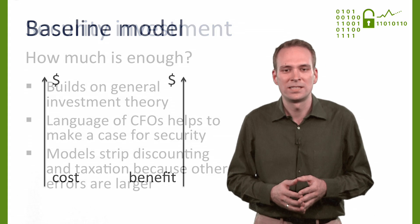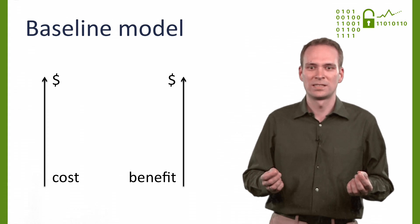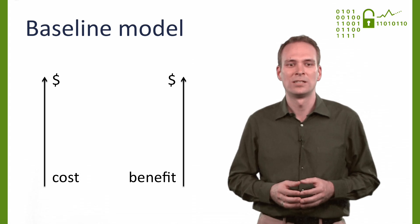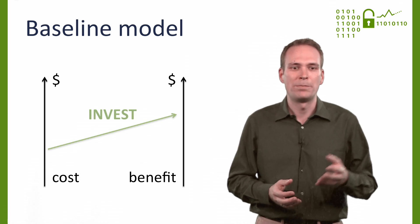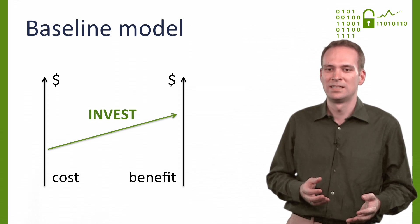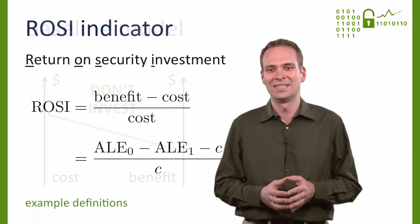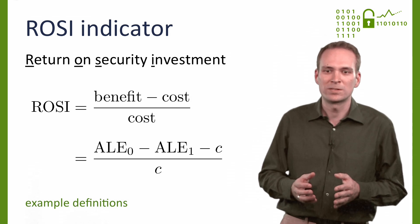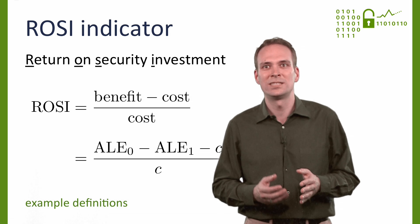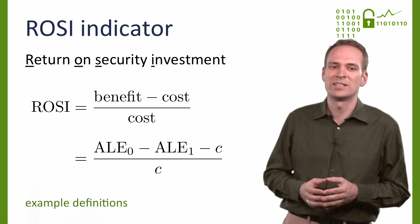So let us start with the simplest possible security investment model. It compares two quantities, both typically measured on monetary scales: cost and benefit of a security investment option. If the benefit is higher than the cost, a rational decision maker invests; otherwise he or she does not. One can find a bunch of formulas in the literature that quantify this ratio. Most authors call these indicators ROSI, shorthand for Return on Security Investment, inspired by the ROI indicator in conventional investment theory.